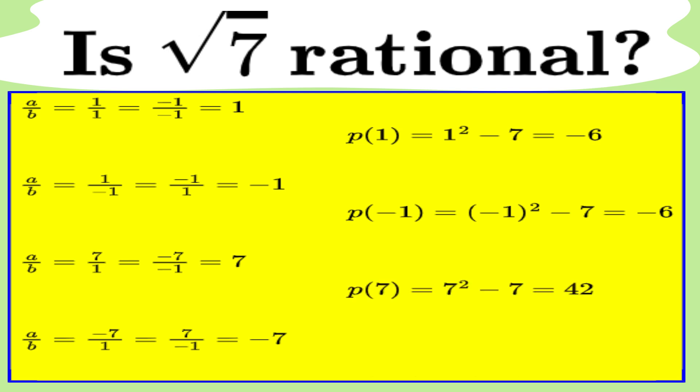Now, let's try 7. 7 squared minus 7 equals 42, nope, not 0. And lastly, minus 7. Minus 7 squared minus 7 equals 49 minus 7 equals 42, still not 0. Another fail.